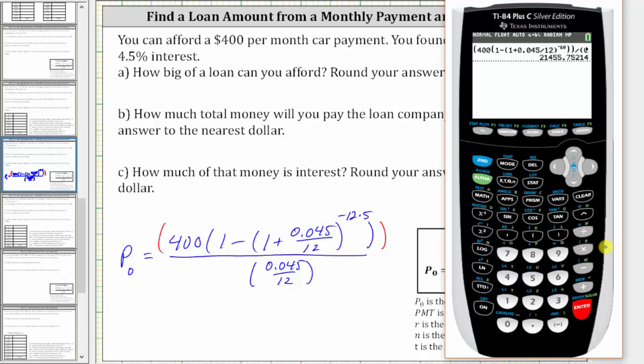We're told to round to the nearest dollar, and therefore the maximum loan you can afford is $21,456.